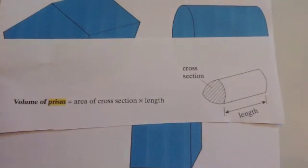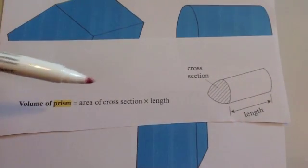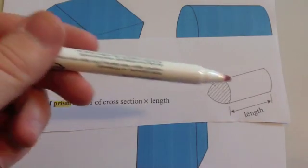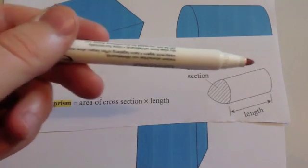The volume of a prism is given by the formula: area of the cross section times the length. The cross section is the part that stays the same. For instance, in this one you would get the area of the cross section times how long it is.